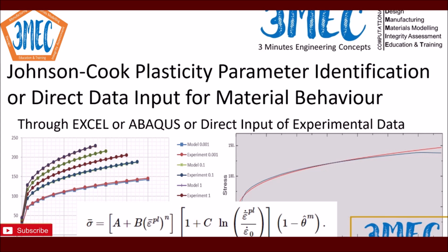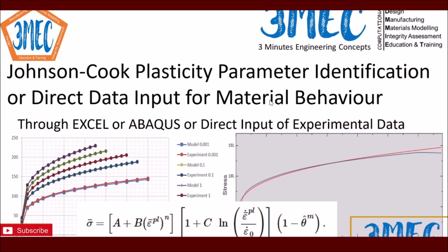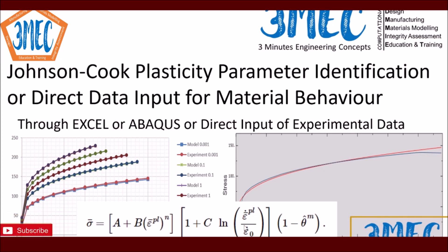A third option would be: why not use the experimental data directly in Abacus? There is a possibility for that as well, though it has limitations — how much data you have from experiments, and what is going to happen between points where you don't have data. For example, the Johnson-Cook plasticity model has strain hardening with three parameters A, B, and N dependent on equivalent plastic strain, and then a strain rate dependence term with parameters C and ε₀̇ (reference strain rate), while ε̇ is the plastic strain rate dependent on the loading itself.